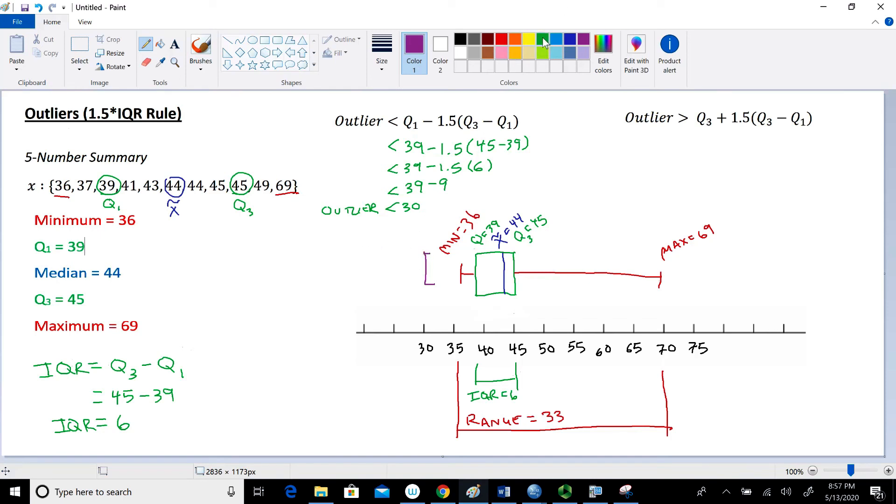So there's no outliers on the left side of the data set, and you probably didn't suspect that anyways. So let's go ahead and check the right side and see if we have any outliers on the right side of the data set.